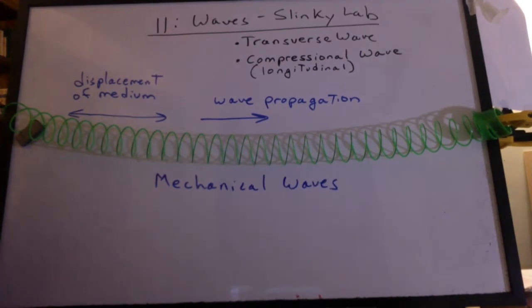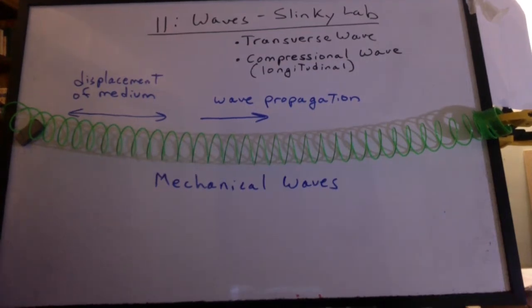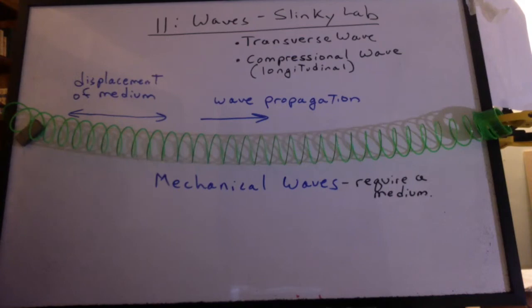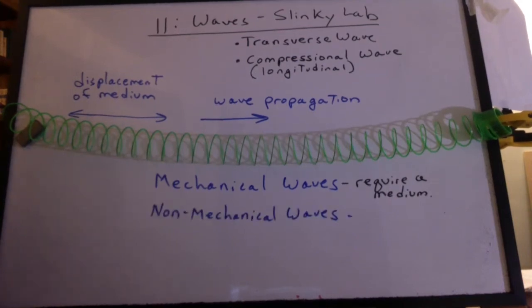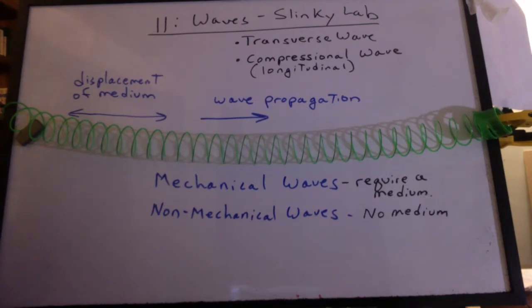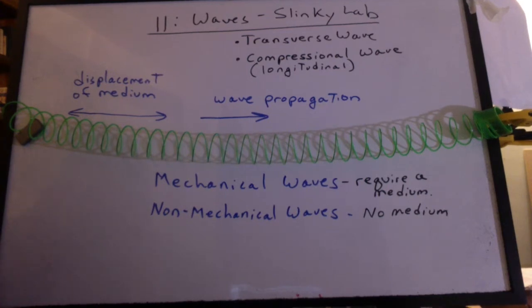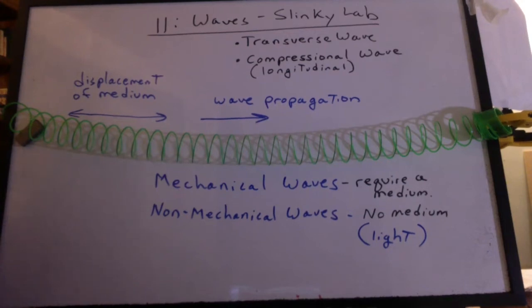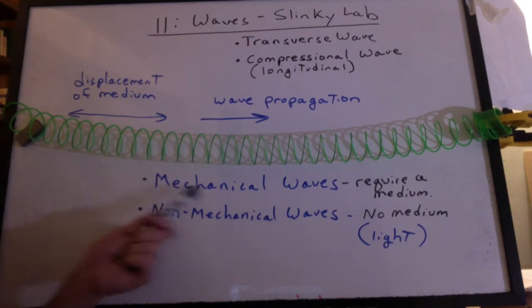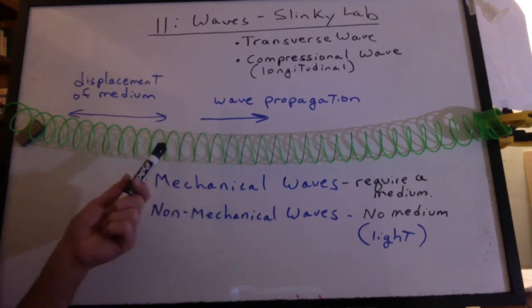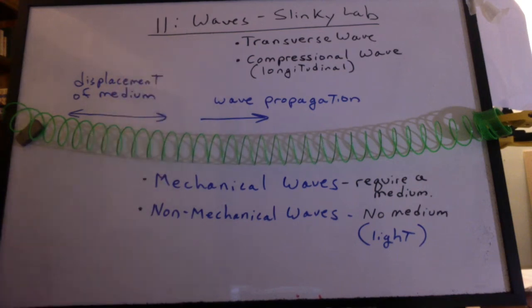So these are examples of mechanical waves. They require a medium to carry the wave. But there's also something called a non-mechanical wave. They don't require a medium. Something that would travel through the vacuum of space? How about light? Or any electromagnetic radiation? In our slinky lab, we're using a mechanical wave. The medium is the slinky, and we're going to be using it in a transverse motion.